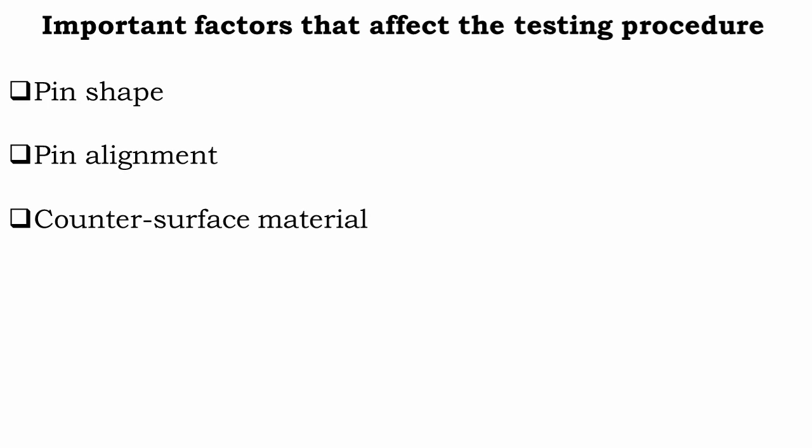Next is counter surface material. It should be noted that typically the tribological behavior of the same material is different depending on which material is used as the counter surface coming in contact. The next one is operating conditions — different operating conditions like temperature, humidity, etcetera can influence the results largely. Therefore, significant care must be taken for controlling these factors.